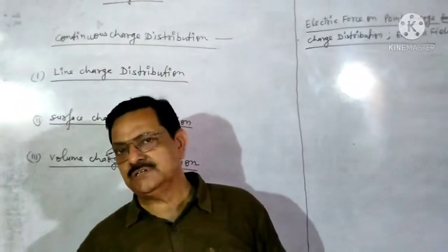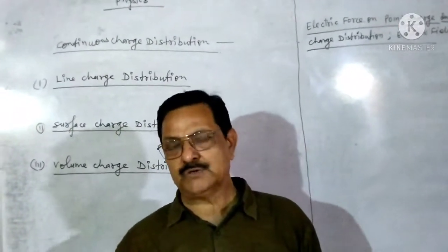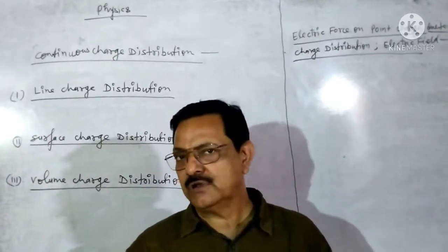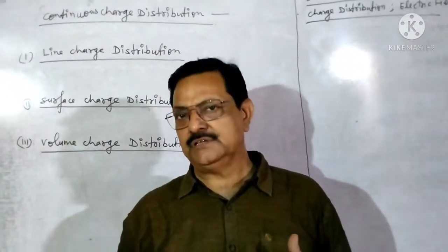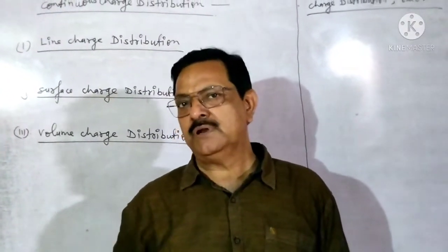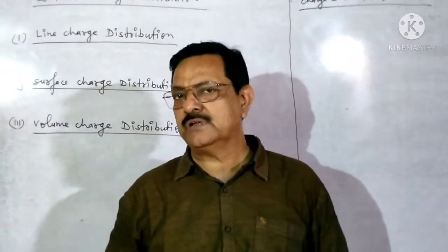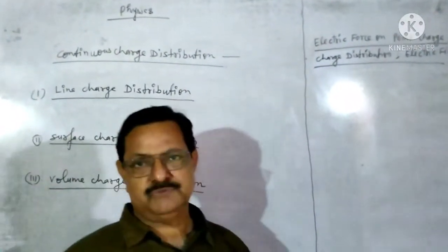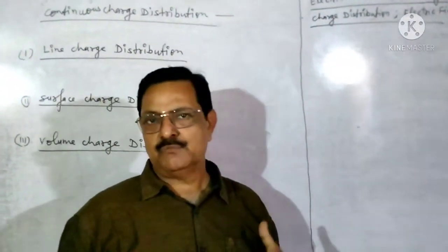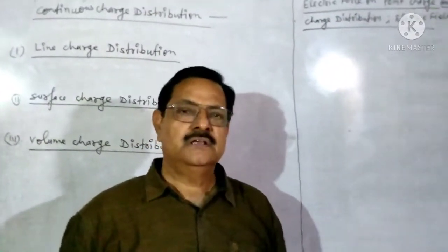But today we are going to start continuous charge distribution. Continuous charge distribution means whenever charge is microscopic — larger amount — quantization is ignored. In that situation we assume charge spreads uniformly over a geometrical region. The uniform spreading of charge over a region is called continuous charge distribution.